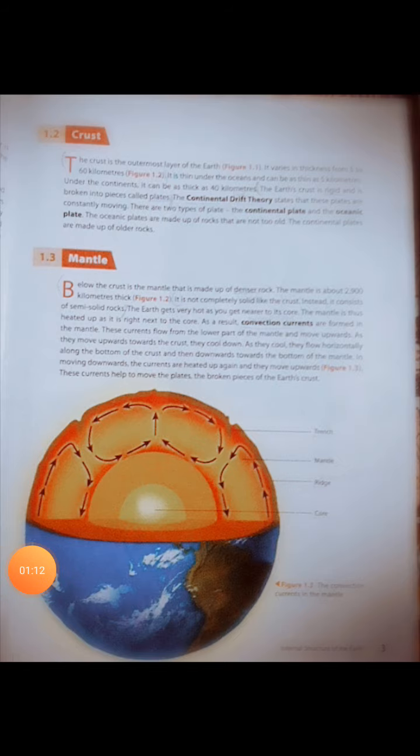The second topic is mantle. Below the crust is the mantle that is made up of denser rock. The mantle is about 2,900 kilometers thick. It is not completely solid like the crust. Instead, it consists of semi-solid rocks.